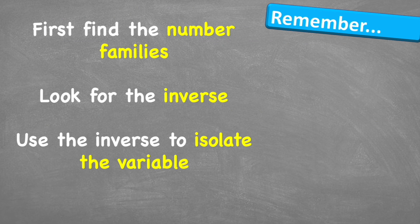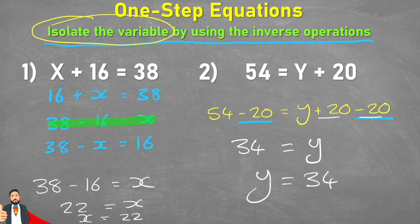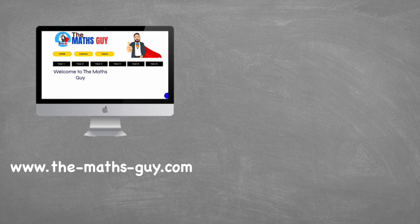To summarize: first, find the number families; then look for the inverse operation and use it to isolate the variable. Or, using the second method, isolate the variable by getting rid of whatever's attached to it — but whatever you do to one side, you must do to the other. Hopefully this video was helpful. Think about subscribing, or check out the free Year 6 SATs course linked in the description.